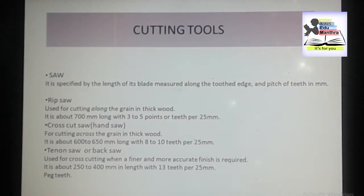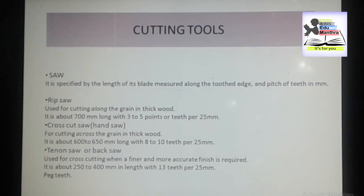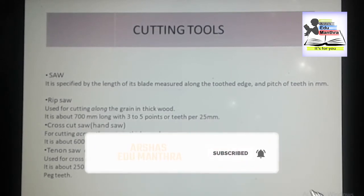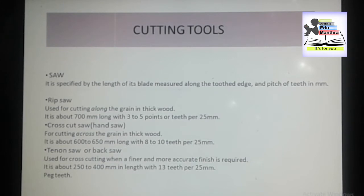Cutting tools include saws, chisels, and gauges. Let us start with saws. A saw is generally specified by the length of its blade measured along the toothed edge, and the pitch of a tip expressed in millimeters. Some of the important saws are: rip saw, cross cut saw, compass saw, tenon or back saw, etc.